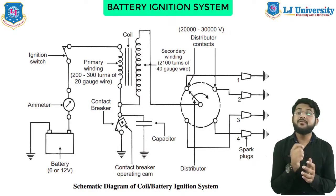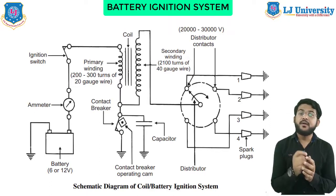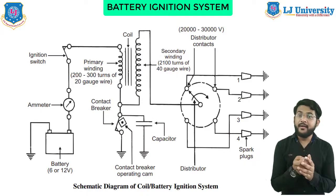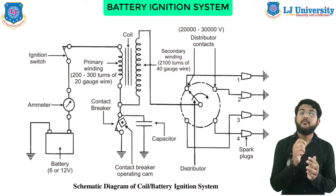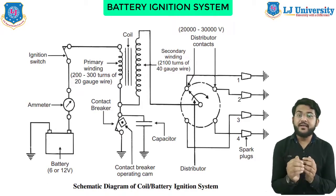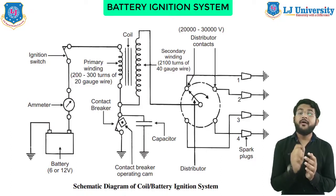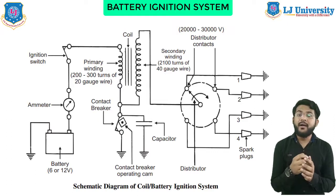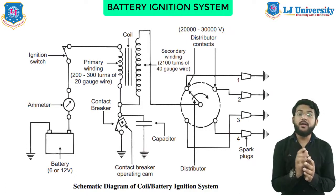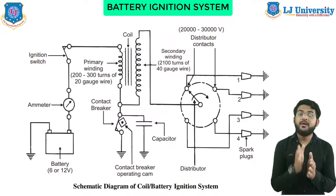The ignition system is divided into two circuits. The primary circuit consists of the 6 or 12 volt battery, ignition switch, primary winding with 200 to 300 turns of 20 SWG wire, contact breaker, and capacitor. The secondary circuit consists of the secondary winding with about 21,000 turns of 40 gauge wire. The bottom end of the secondary is connected to the bottom end of the primary, and the top end of the secondary winding is connected to the center of the distributor rotor, which makes contact with points connected to the spark plugs in the cylinder heads.